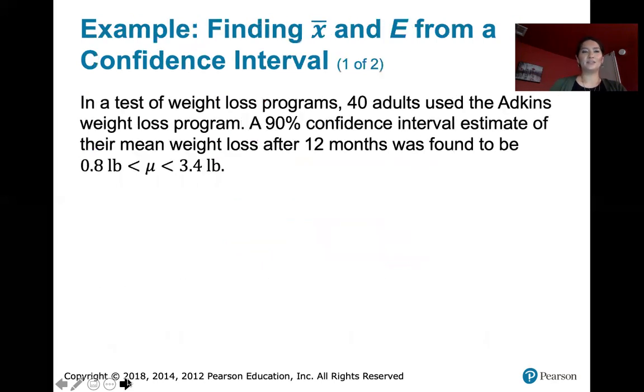Okay, so here's a question. In a test of weight loss programs, 40 adults used the Atkins weight loss program. A 90% confidence interval estimate of their mean weight loss after 12 months was found to be 0.8 lb < μ < 3.4 lb. Now remember how we interpret this.